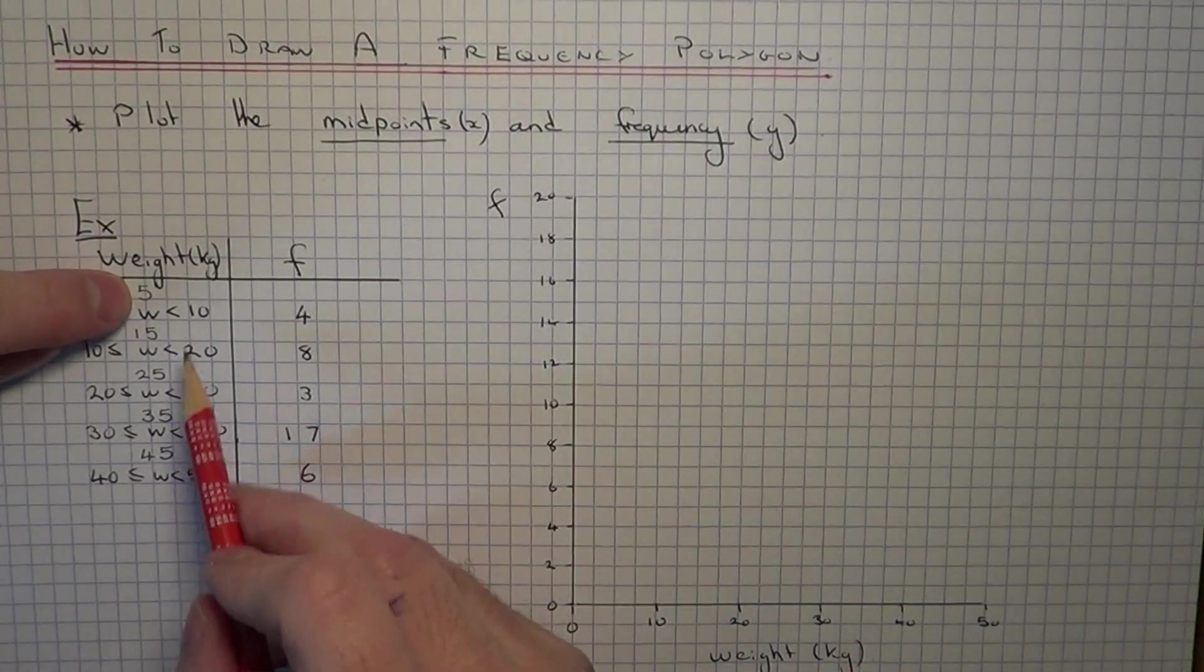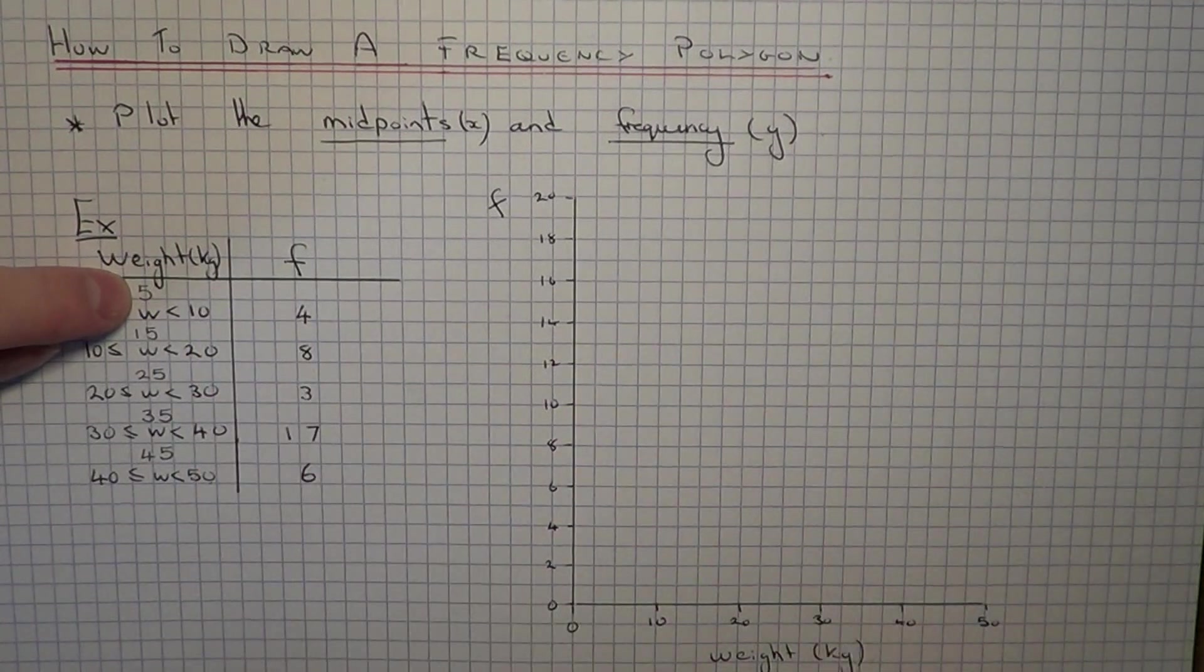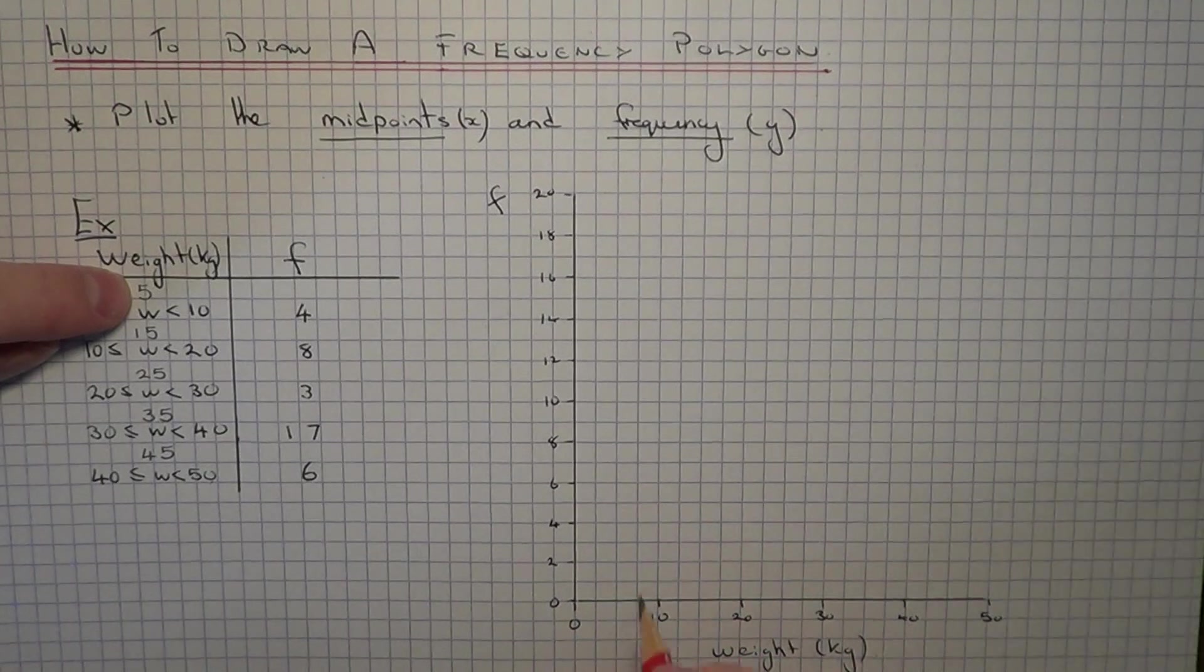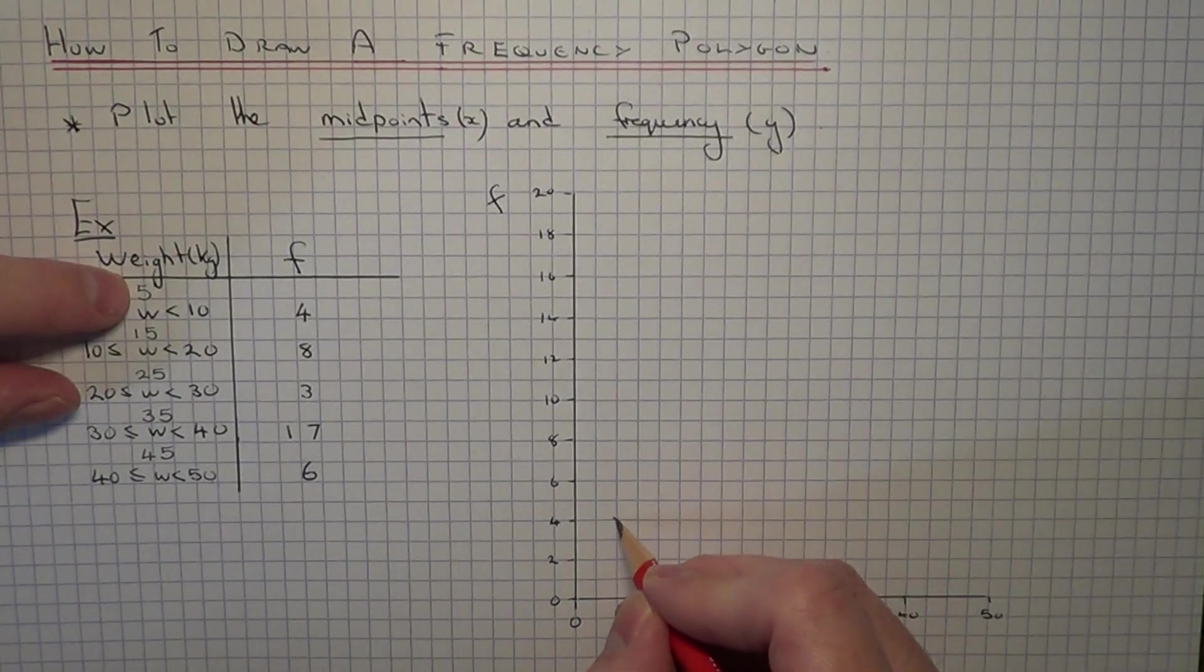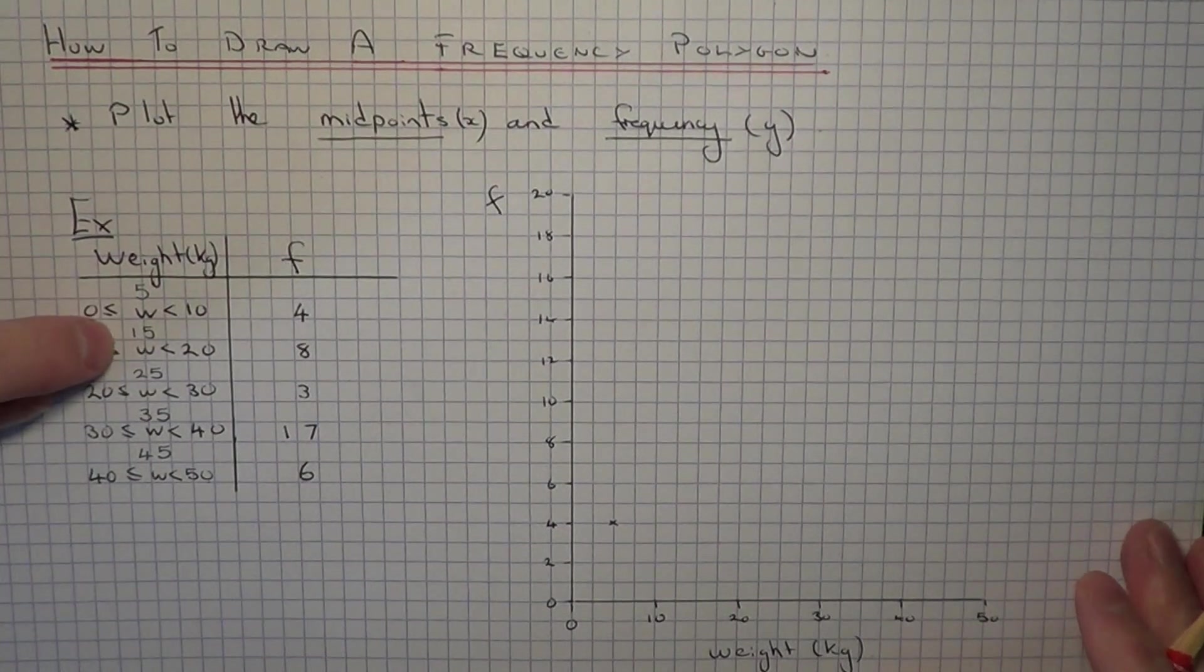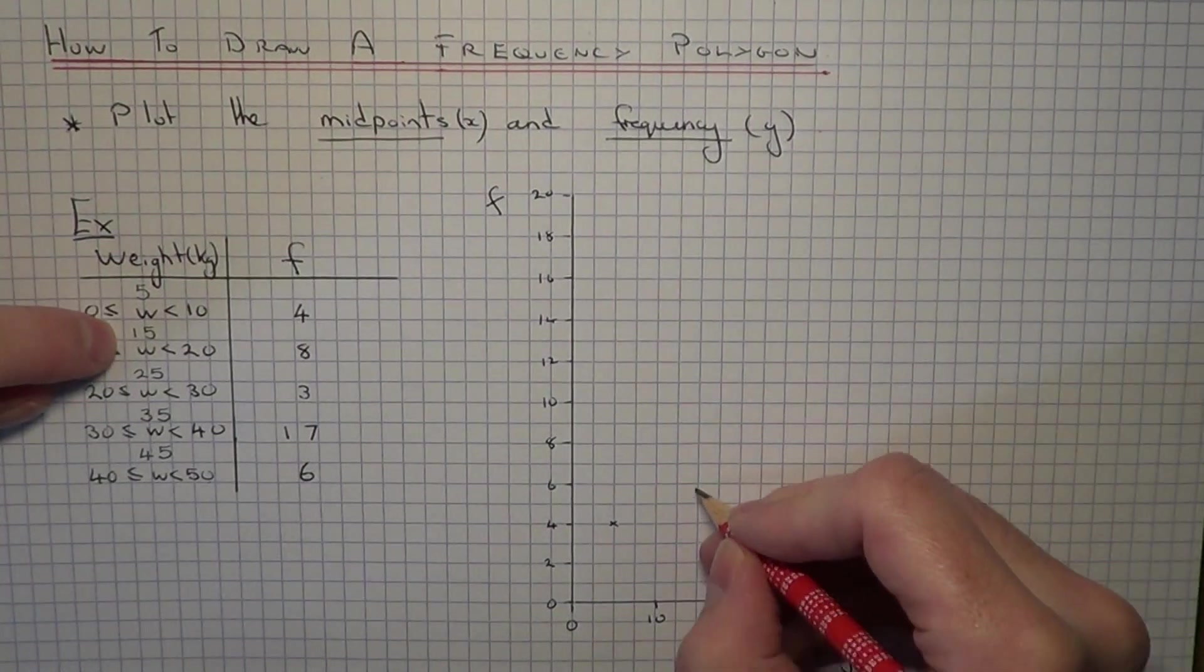So our first point would be at 5, 4. So there is 5 and then we have to go 4 up. Our next point would be at 15, 8.